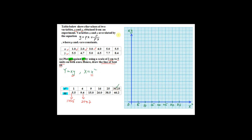For the vertical axis (xy), still use a scale of 2 cm to 5 units. Your values range from 5.5 all the way to 46.2. Mark 5, 10, 15, 20, 25, 30, then continue with 35, 40, 45 to accommodate the highest value of 46.2.